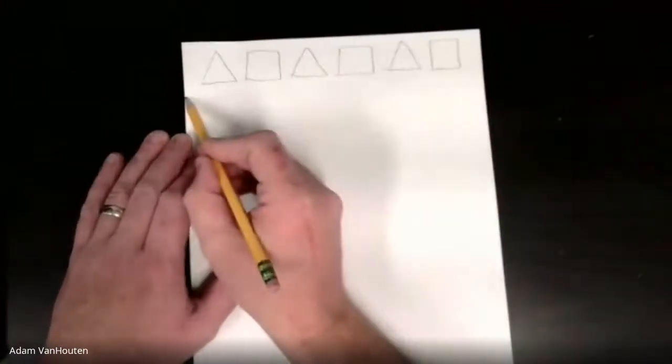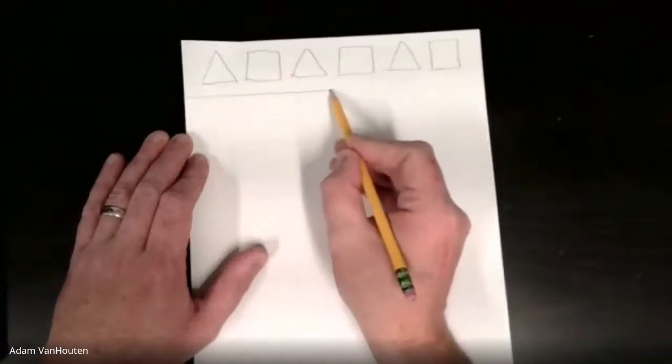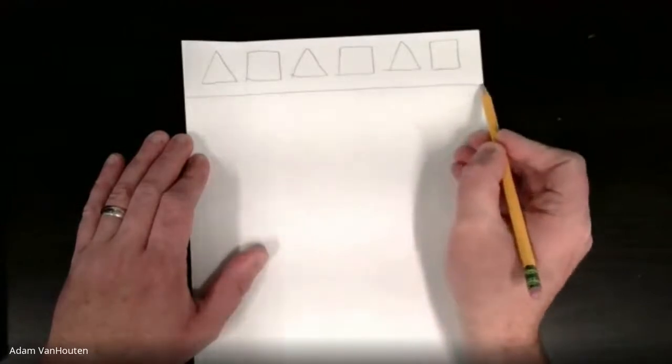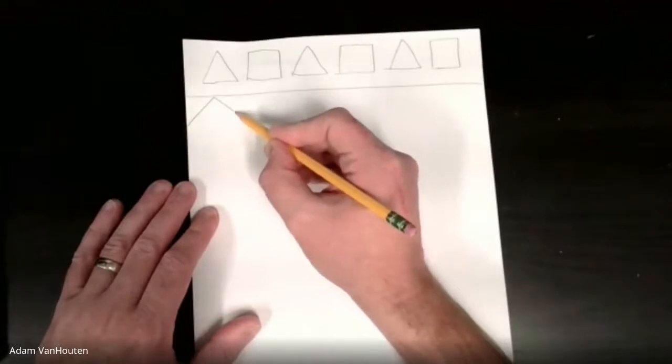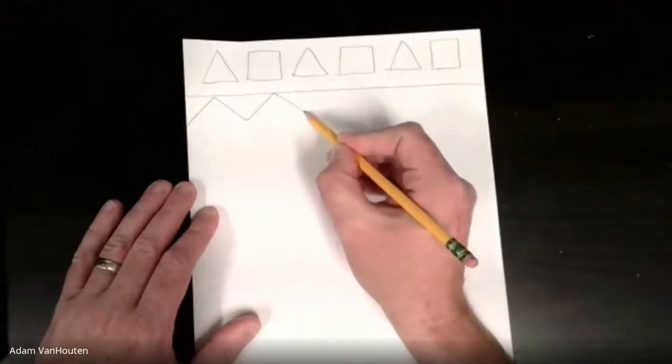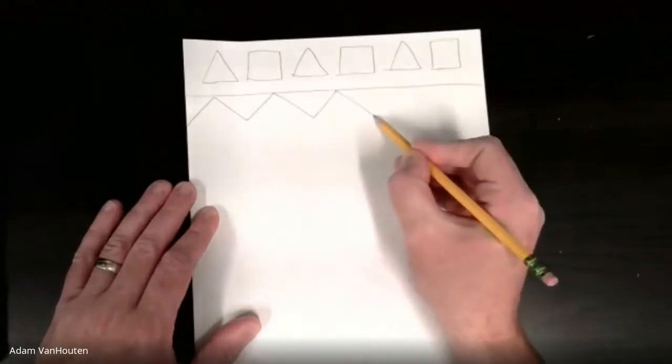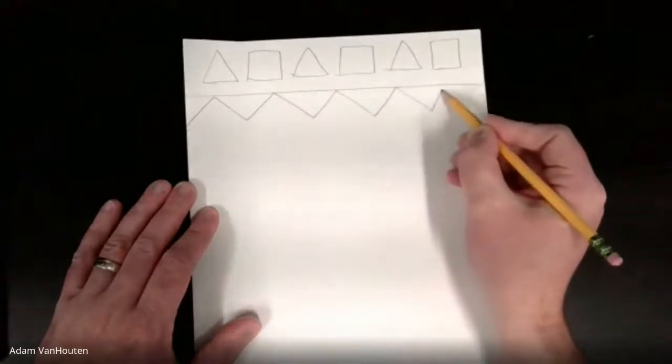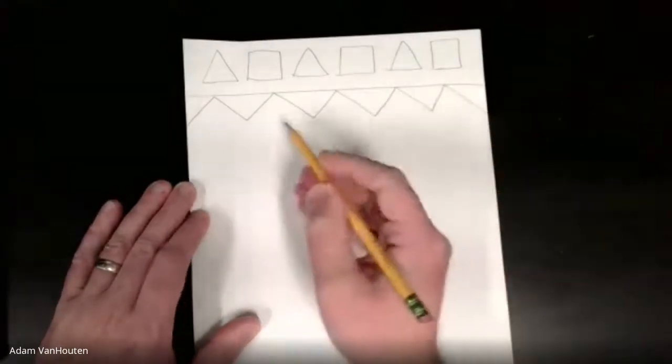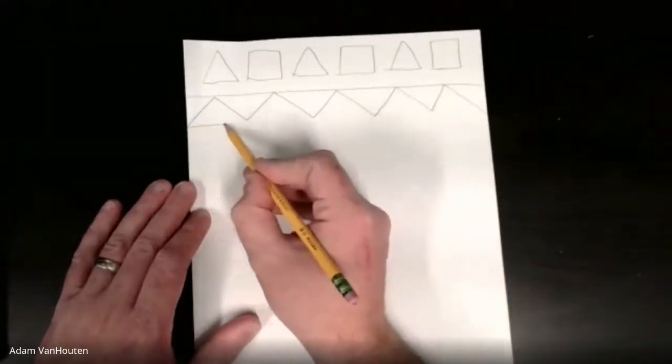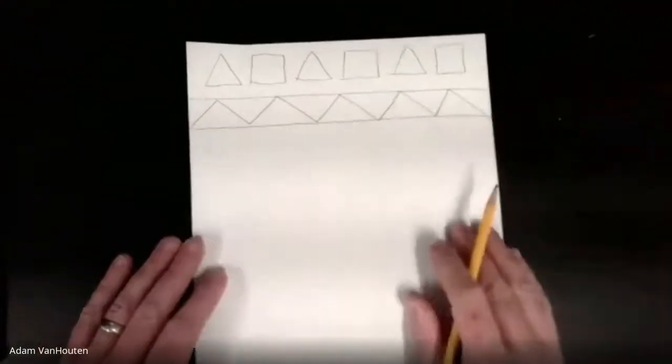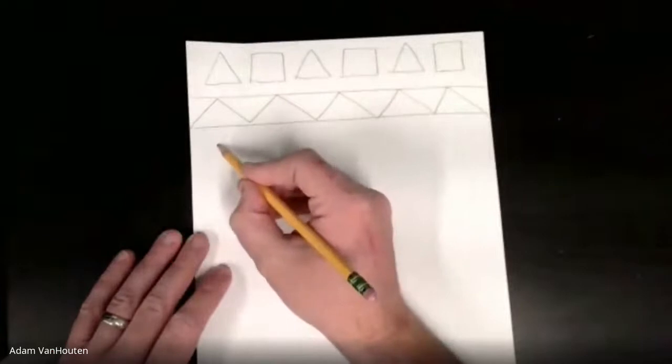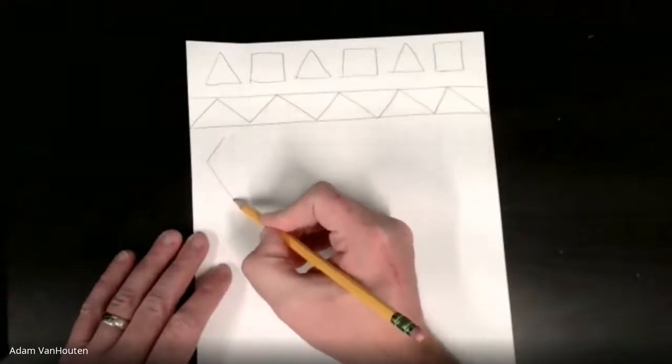And then I'm just going to make a line across there and I'm going to make another pattern. I'm going to make a zigzag line going this way. And then I'm going to put a line across it.